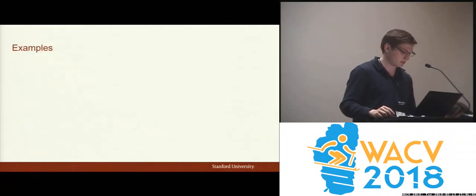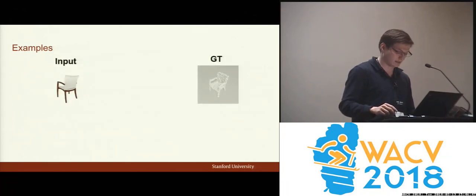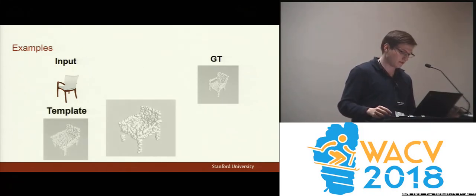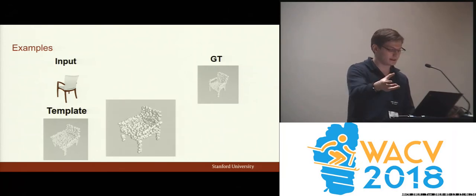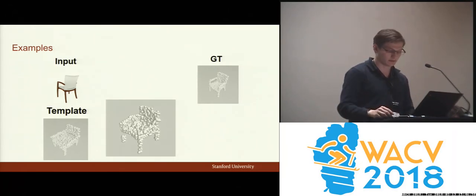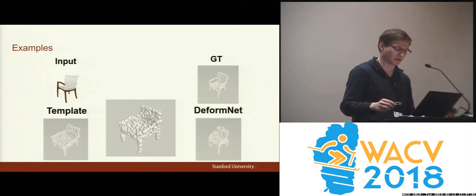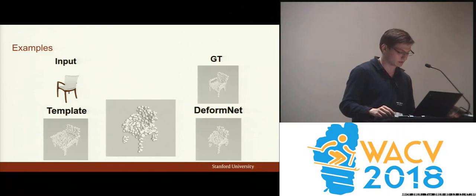Here's an example run-through. We have an input of this chair, and we know its ground truth shape is something like this. We retrieve this template — a similar type of chair, but a bit longer. DeformNet produces this output: it deforms that template, squashes it, makes it more like the input. The final output is much more clearly like the ground truth than the template was.